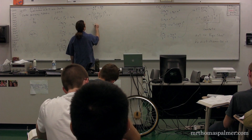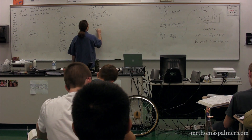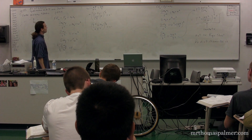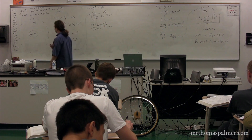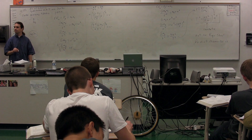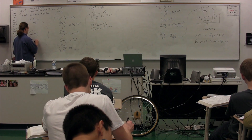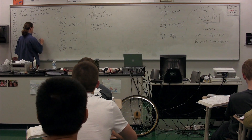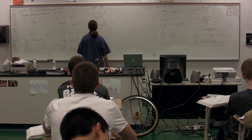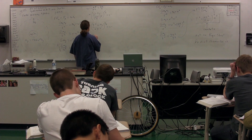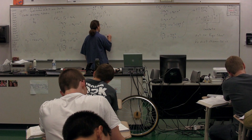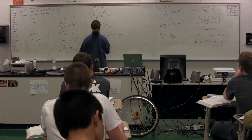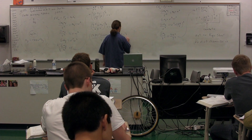We have the period: 9.84 hours. We have big G: 6.67 times 10 to the negative 11. We have the mass of Jupiter from the table: 1.90 times 10 to the 27 kilograms. So our expression is the cube root of (9.84 squared times 6.67×10⁻¹¹ times 1.90×10²⁷ divided by four pi squared) equals r.